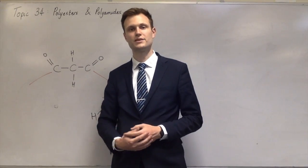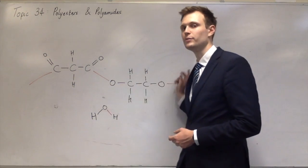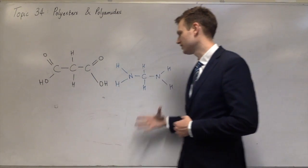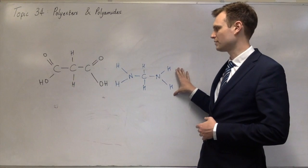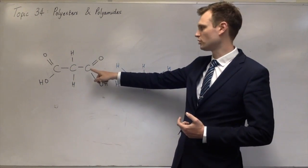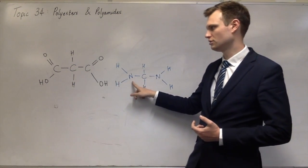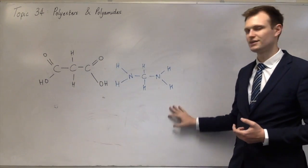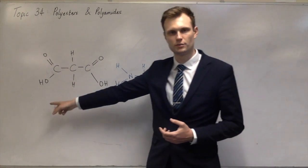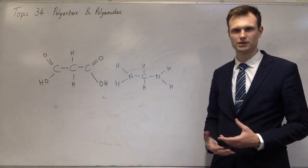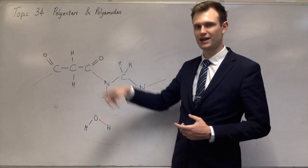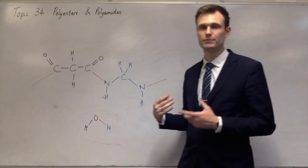Now I'm going to show you a polyamide — it's very similar, but it uses a diamine rather than a diol. This time I'm reacting propanedioic acid with a diamine, so it has an amine on one side and an amine on the other. The OH and H2 would leave as water and you'd end up with a bond between this carbon and this nitrogen. Then this OH and one of the hydrogens would leave, making another carbon-nitrogen bond. You get a very similar repeating unit, but this time it's an amide bond — an amide group. This would be the repeating unit for any polyamide.